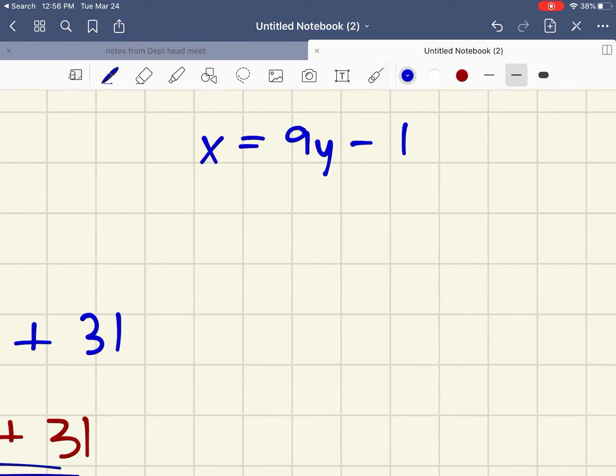So x equals 9y minus 1. x equals 9 times 2 minus 1, which is 18 minus 1, or 17.